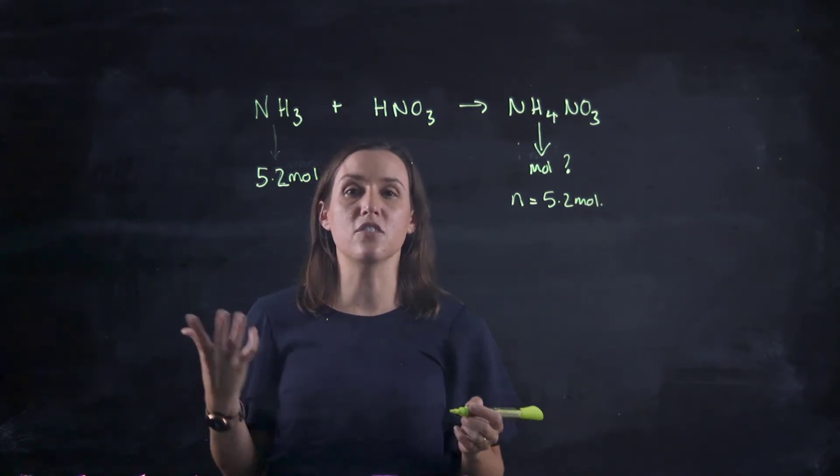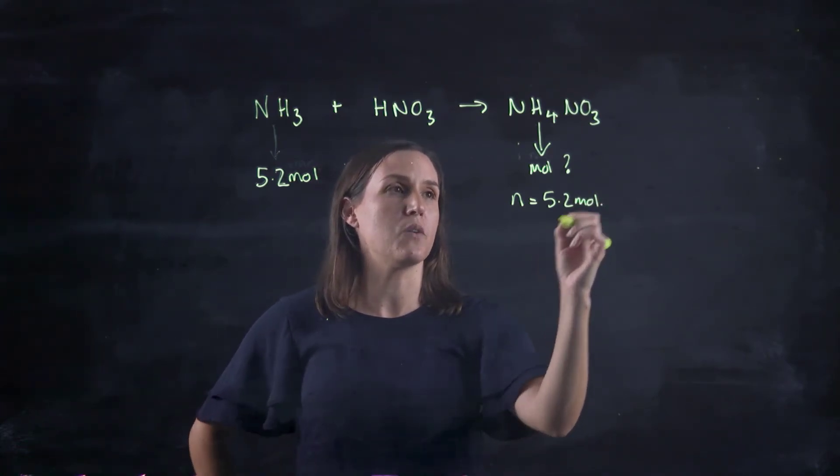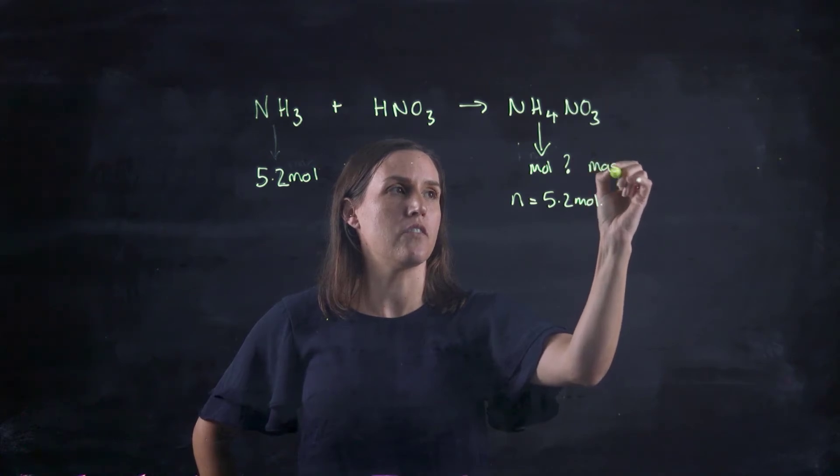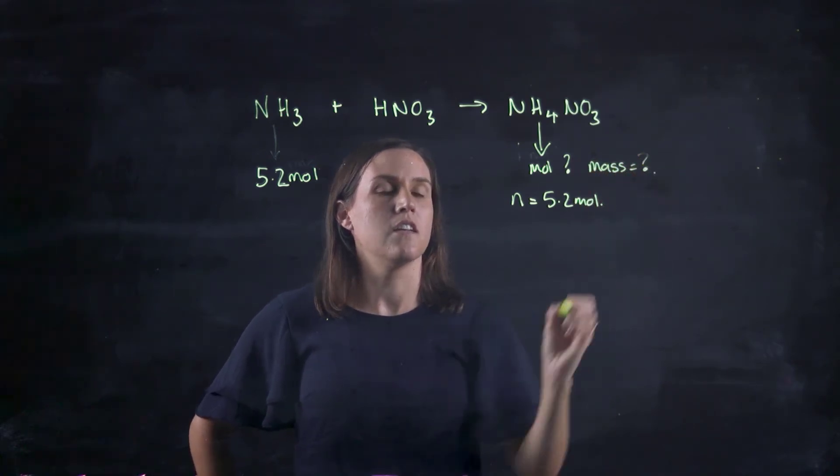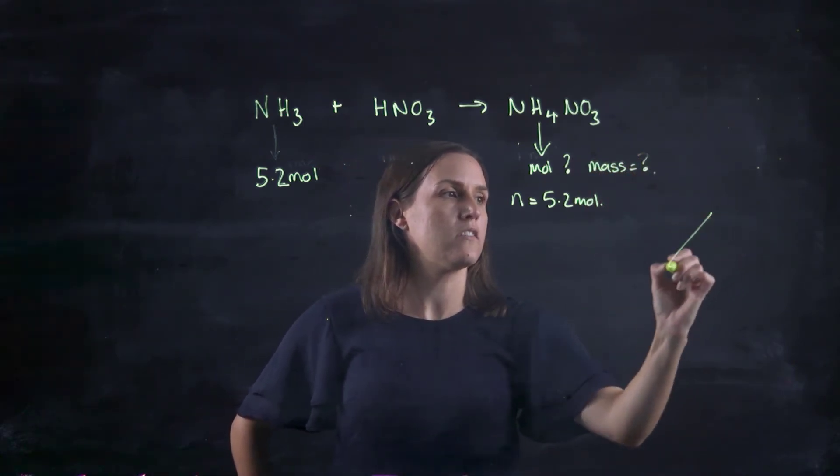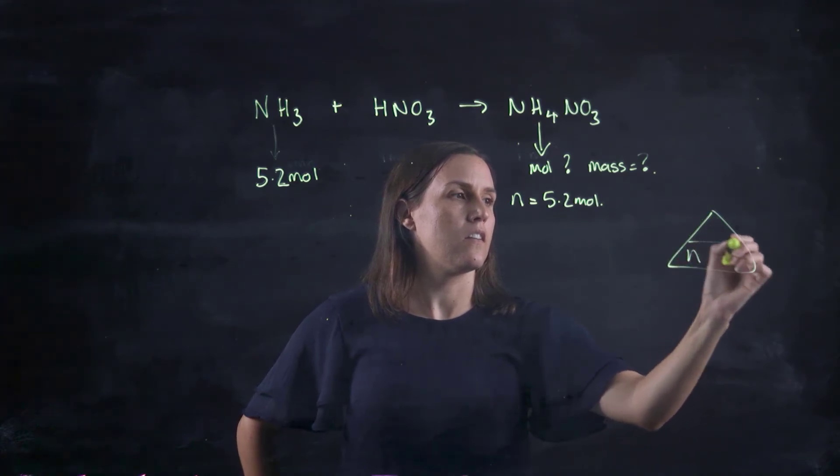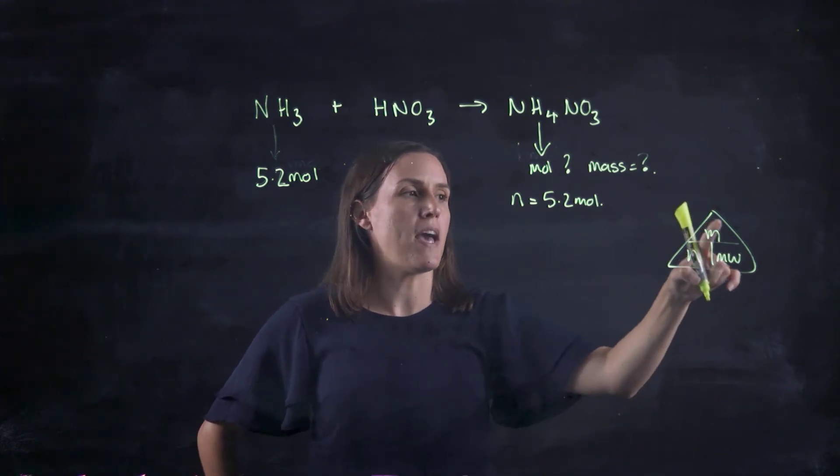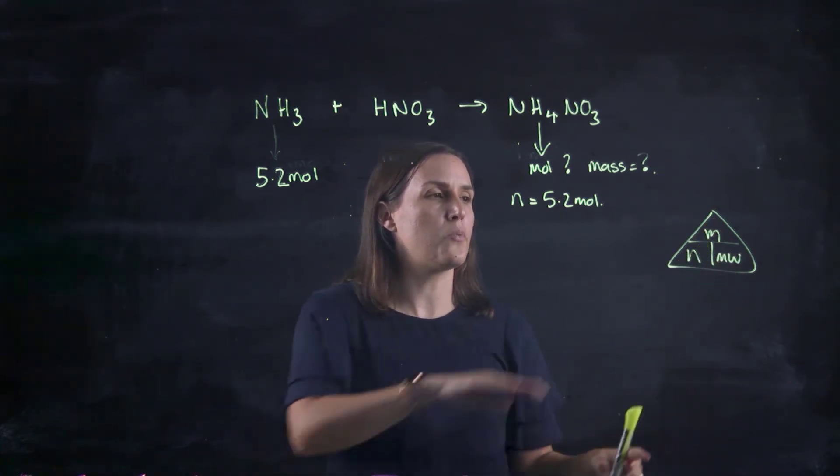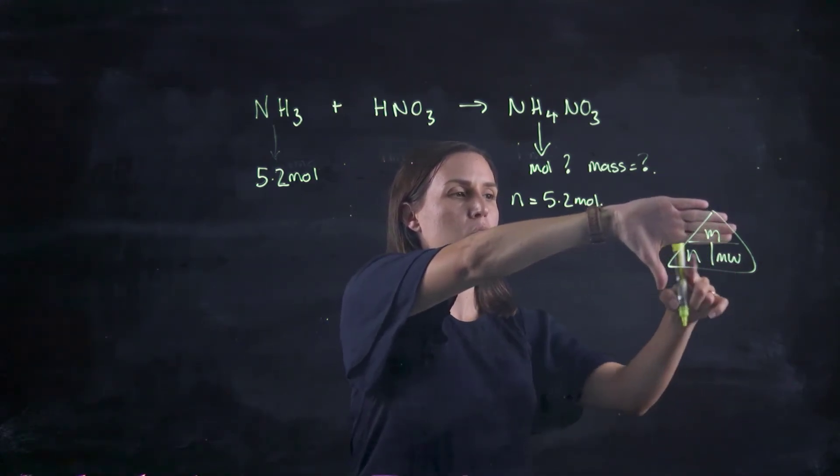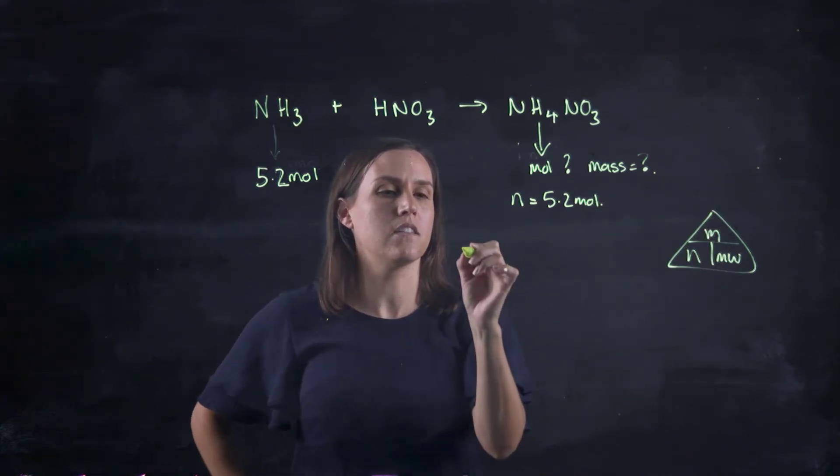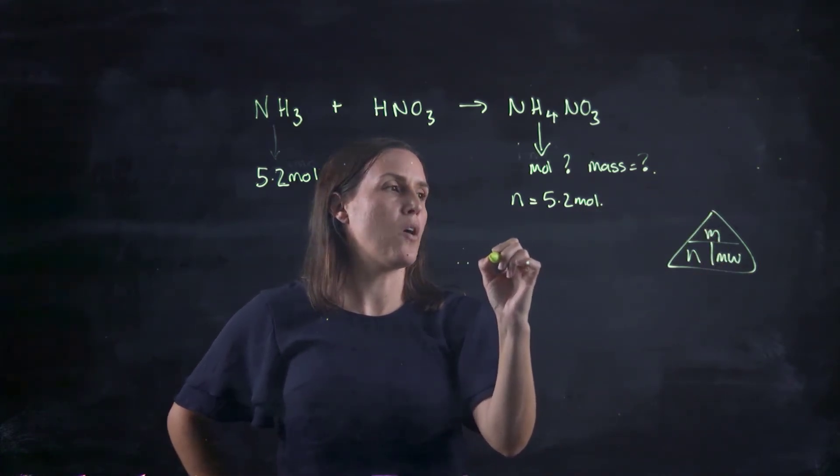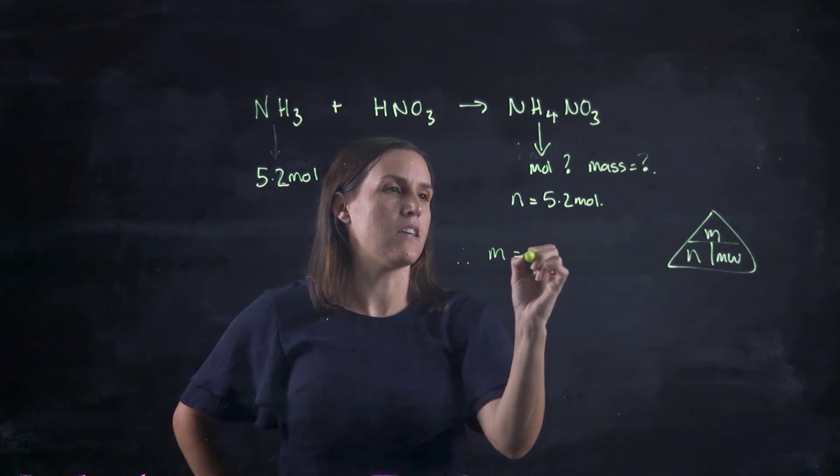Now, if I want to convert this into grams, so the question might be asking, what is the mass of the product? So then I go back to my triangle. So the number of moles is my mass divided by molecular weight. So to work out the mass, it's the moles times the molecular weight.